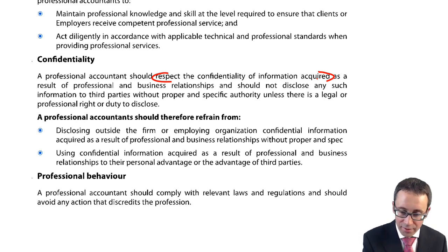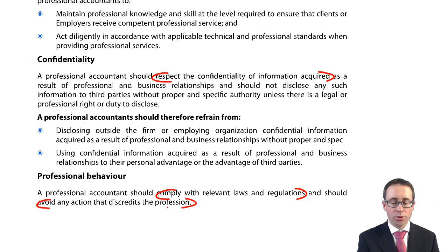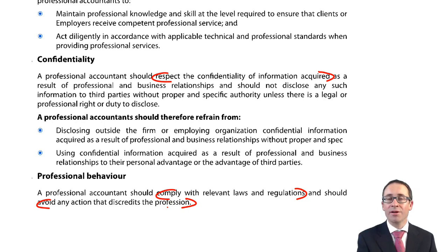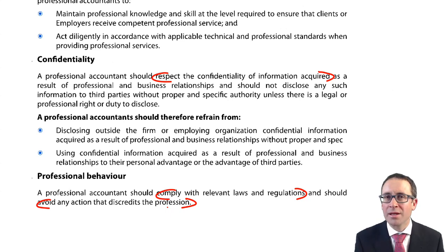Professional behaviour means you need to comply with the relevant laws and regulations and avoid any action that discredits the profession. For example, the Cooperative Group in the UK — which we cover in corporate governance — had a CEO who acted in a very non-professional manner, which resulted in him being asked to leave. You need to respect your institution, uphold their beliefs to the utmost, and do nothing to try and discredit it.